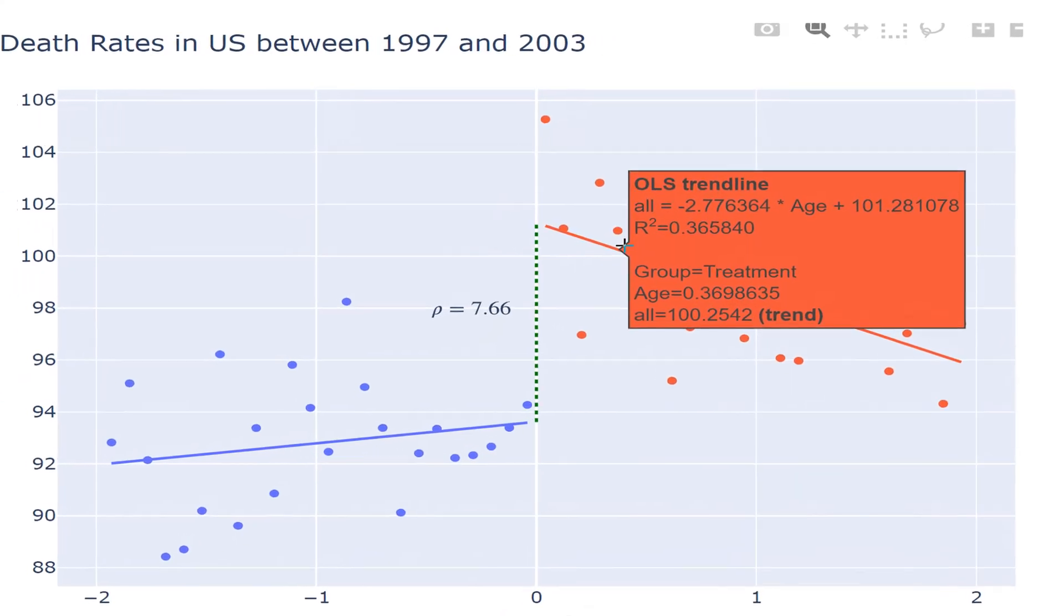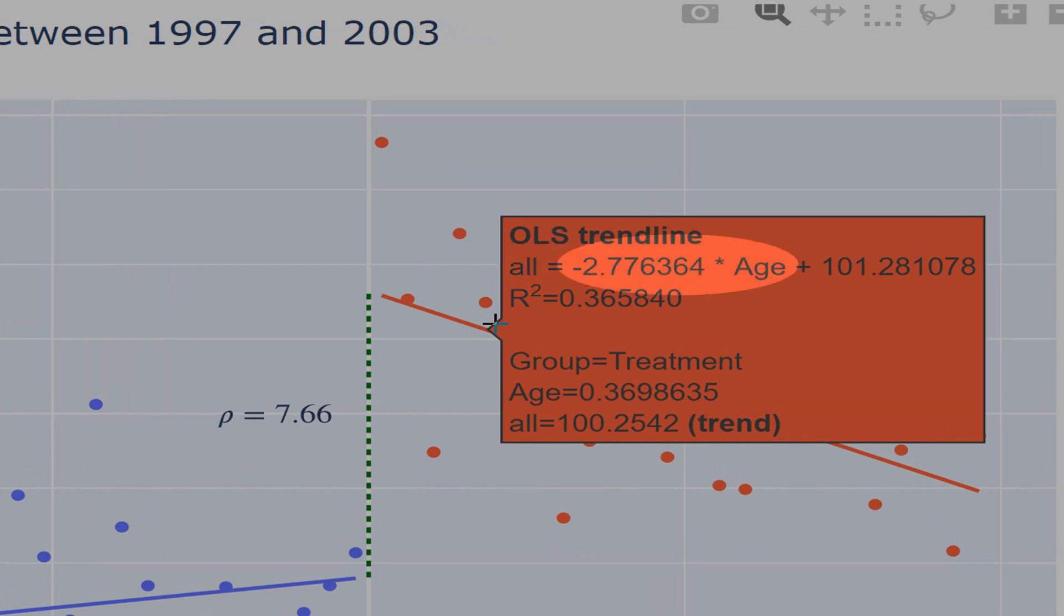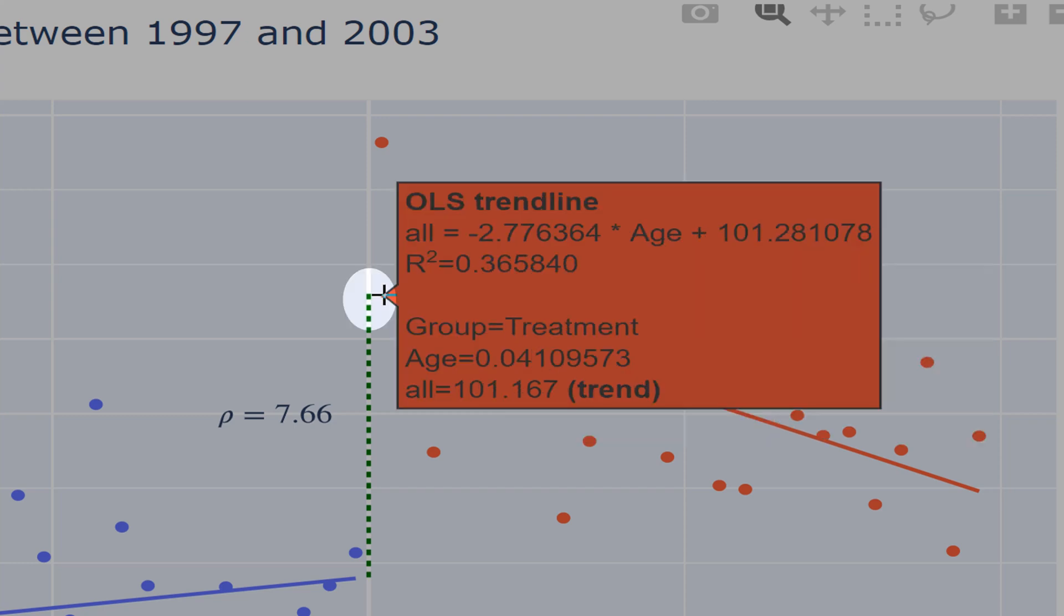Let's see the equation for the line. M̄ here is the mortality rate, is the Y. Minus 2.7 is the slope of age, and the plus 101 is the intercept. It's this point here, exactly this point here.